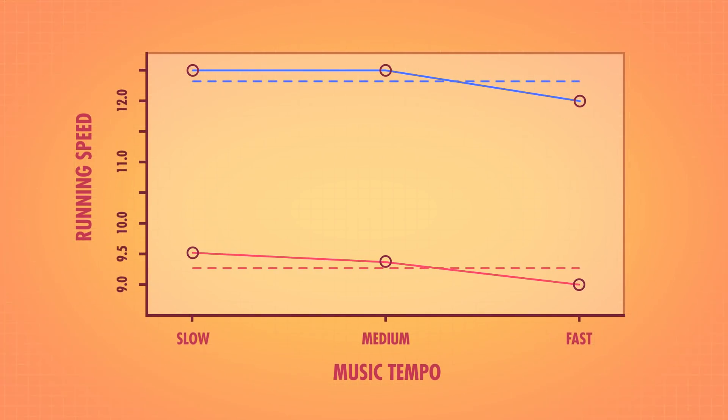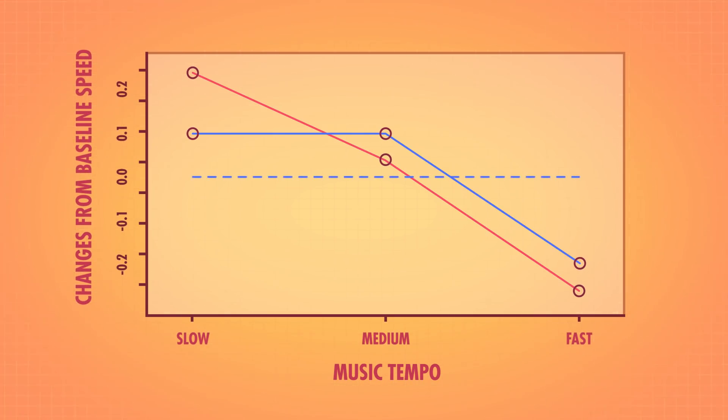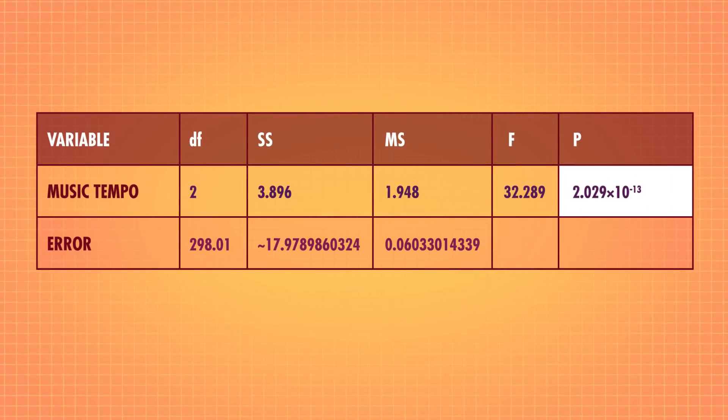So we tell our model which measurements belong to the same person, and then we tell our model to let each individual person have their own baseline mile time. We'll just look at how much music tempo affects the changes from people's baseline running speeds. Whether you normally run a 5 or 15 minute mile, an increase of 1 minute will be counted the same. Theoretically, it's sort of like centering everyone on their own mean running speed — if you normally run a 6 minute mile, that becomes your zero baseline. Since the math of these models, sometimes called random effect models, can get a little intense, we're just going to focus on how to read the ANOVA table output from a repeated measures ANOVA. Our output shows that there is actually a significant effect of music tempo on running time.